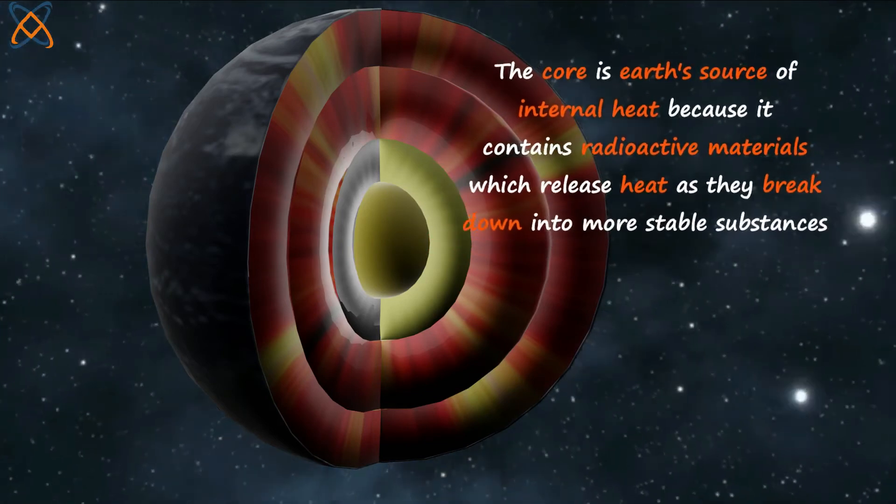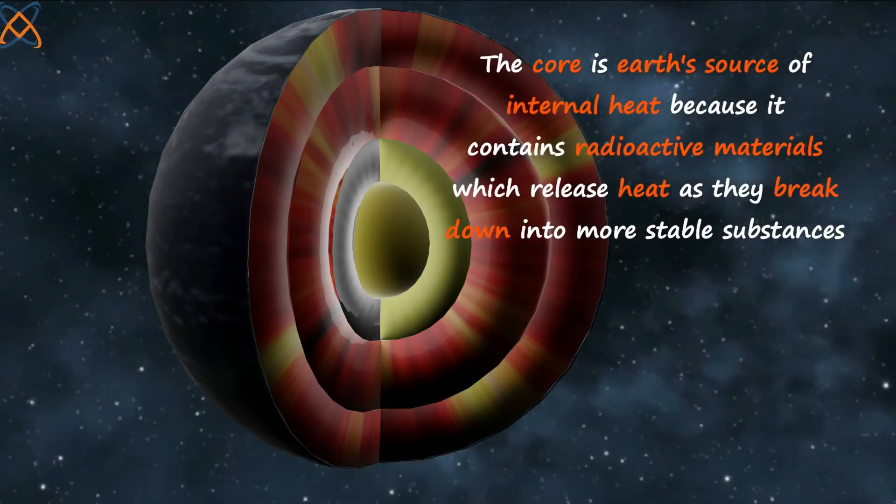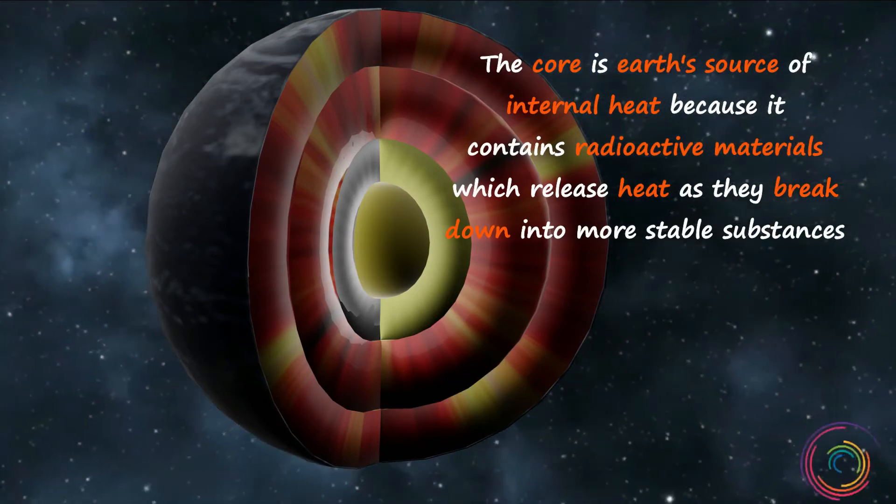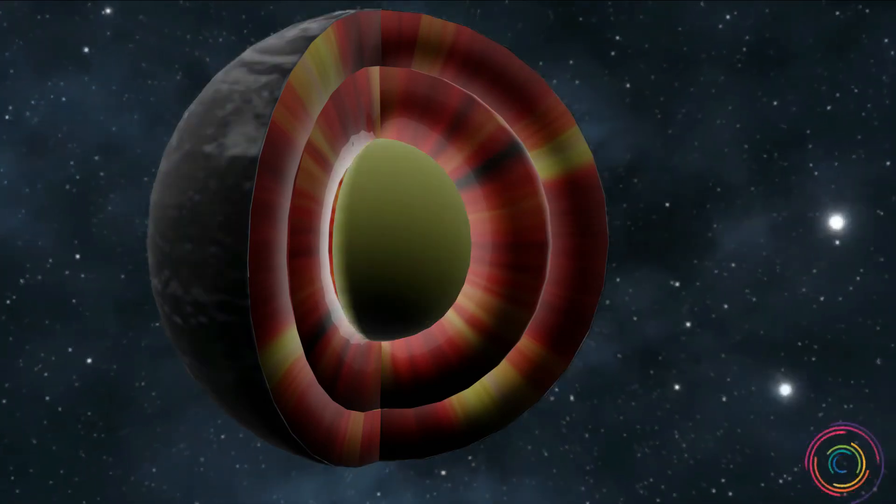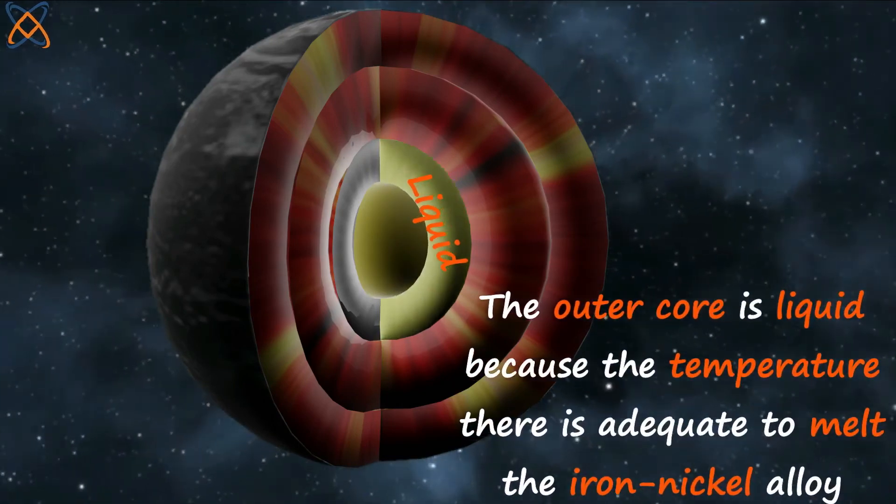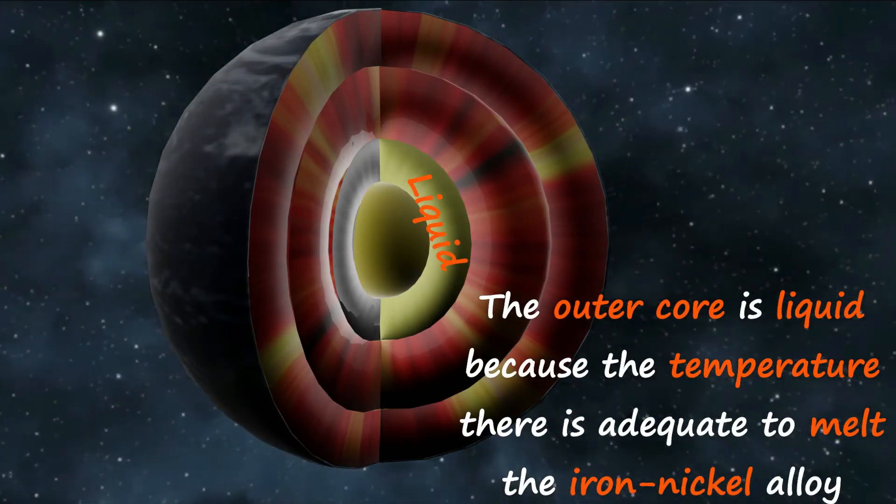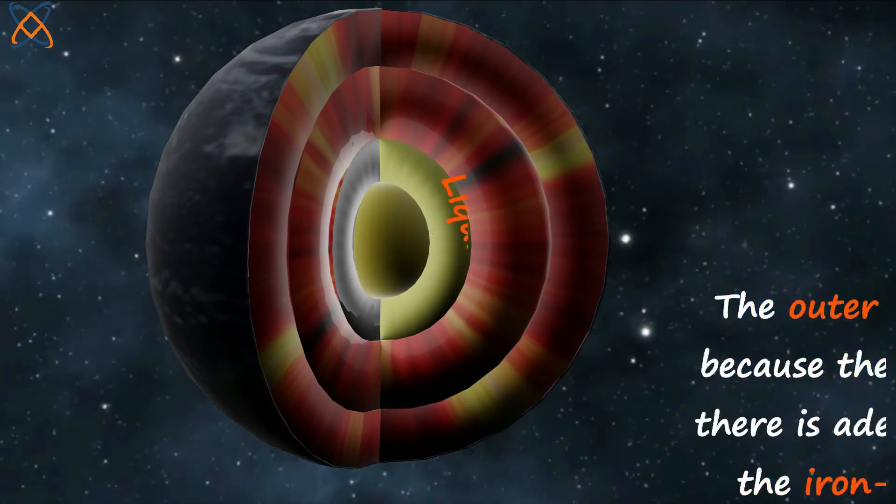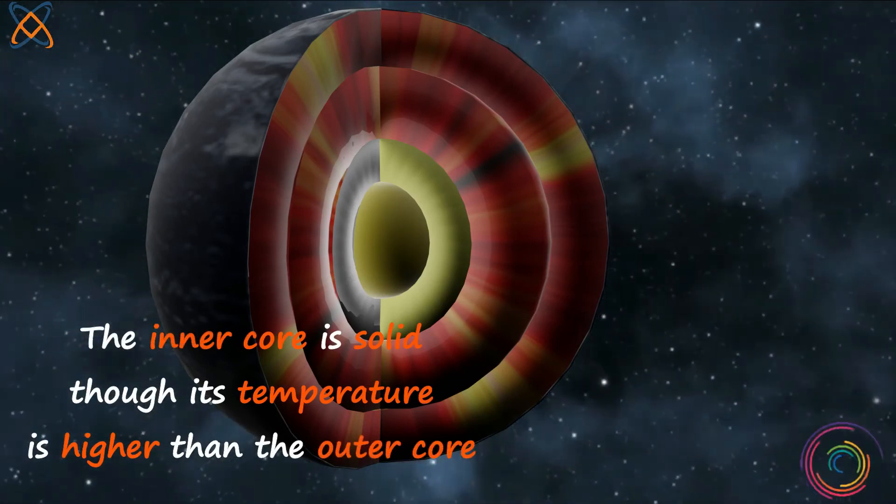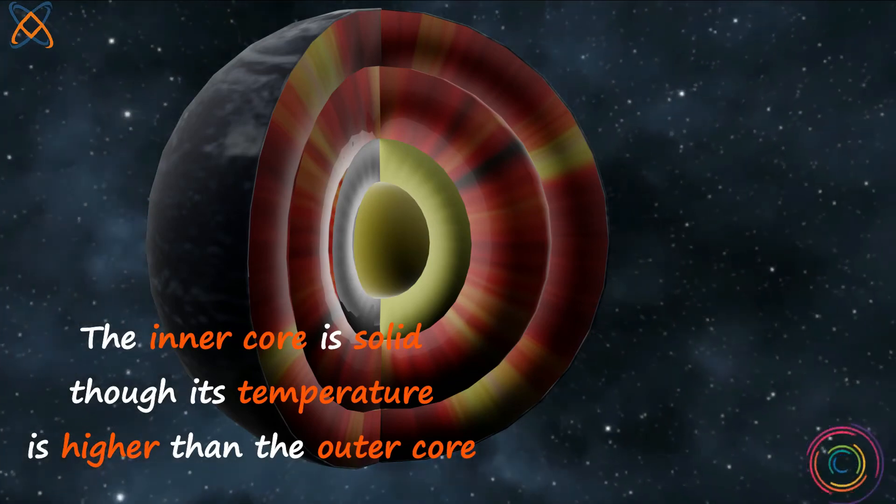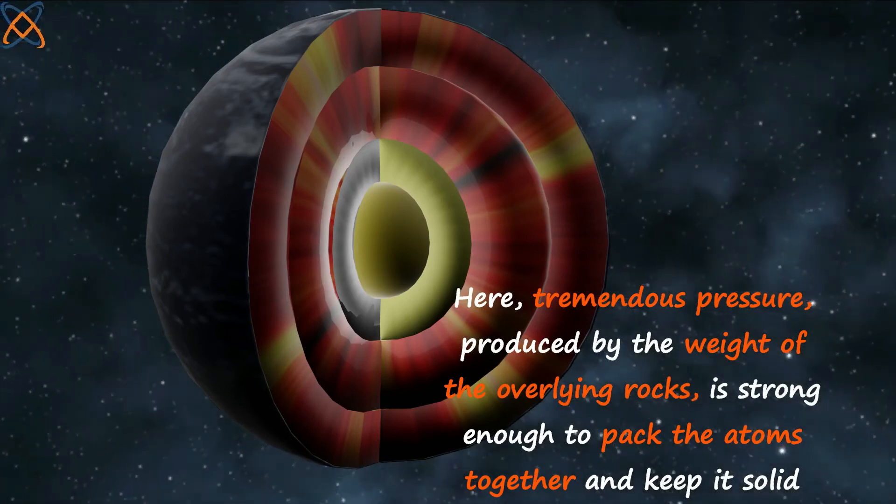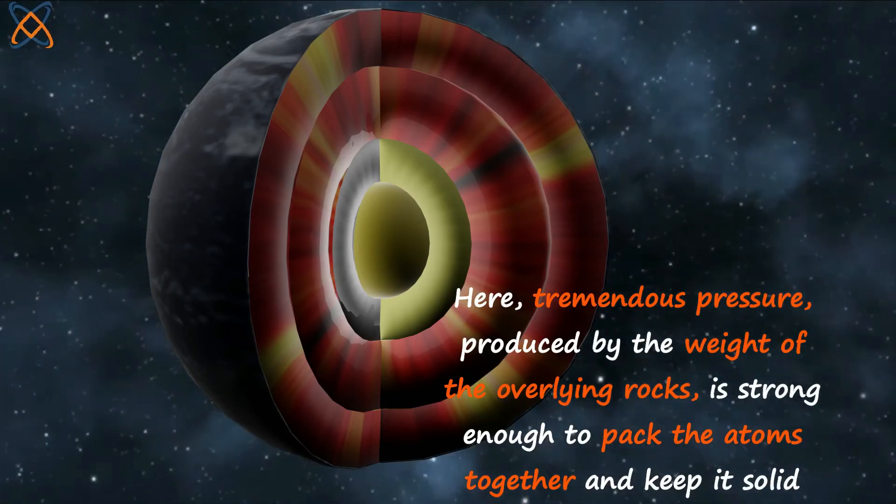The core is the heat source of internal heat because it contains radioactive materials, which release heat as they break down into stable substances. The core is divided into two different zones. The outer core is liquid because the temperature there is adequate to melt the iron-nickel alloy. However, the inner core is solid even though its temperature is higher than the outer core. In the inner core, tremendous pressure produced by the weight of the overlying rock is strong enough to pack the atoms together and keep it solid.